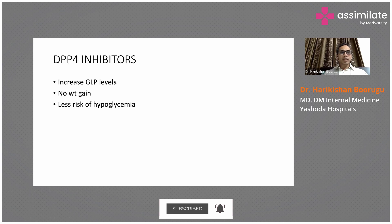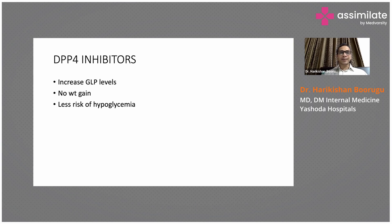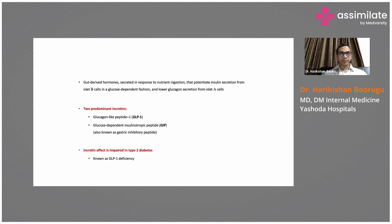What do DPP-4 inhibitors do? To understand that, you need to understand something called incretins. DPP-4 inhibitors increase endogenous GLP-1 levels. The advantage of these DPP-4 inhibitors is that they do not cause weight gain and there is a very low risk of hypoglycemia.